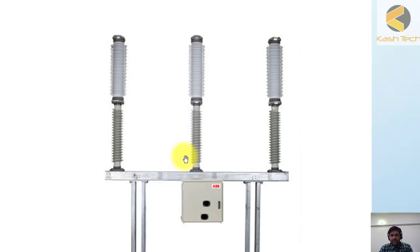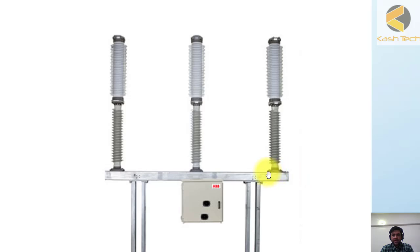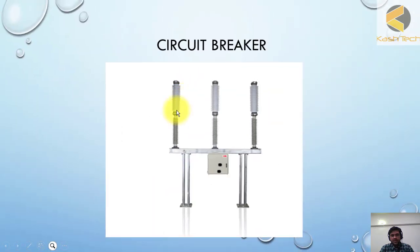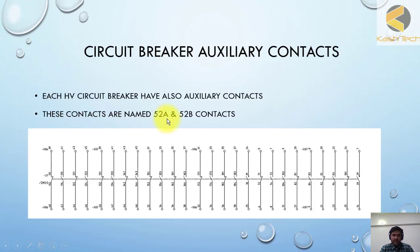There are two types of breakers: one where a common mechanism drives all three poles to interrupt the current — called three-pole operated breakers — and another where each pole has its own mechanism to open, called single-pole operated breakers. At extra high voltages, single-pole operation is normally used at 220, 380, or 500 kV level, whereas at 132 kV and below, either single-pole or three-pole mechanism (a single mechanism driving all three poles) is used. Each circuit breaker when it operates has its own auxiliary contacts.